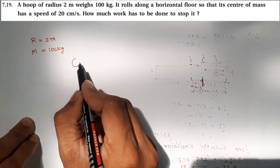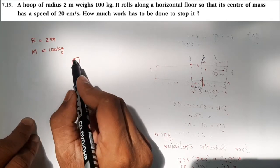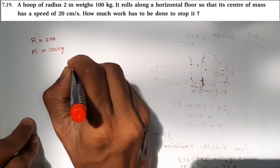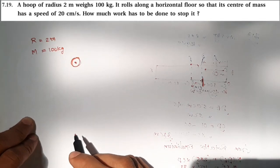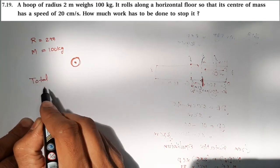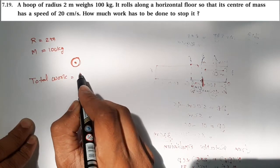When there is a sphere or circular object, there will be rotational motion and linear motion of the center. Total work means total energy equals kinetic energy for the linear motion and kinetic energy for the rotational motion.